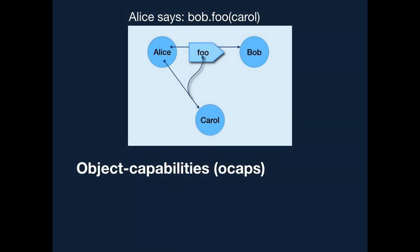So object capability programming is very close to normal object programming. Normal object programming in a memory safe language already has a permission system in it that we don't normally think of as a permission system. Over here we have three objects that are Alice, Bob, and Carol.